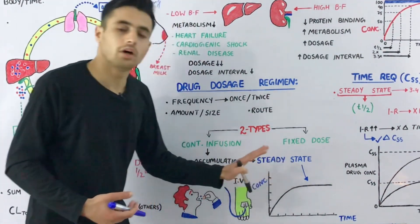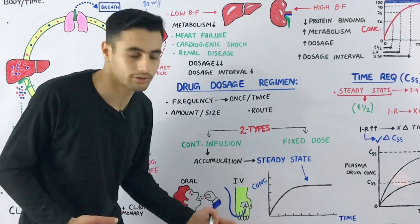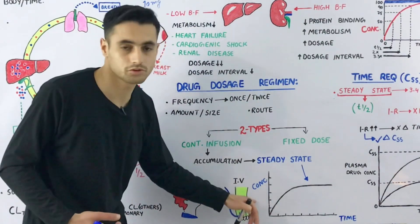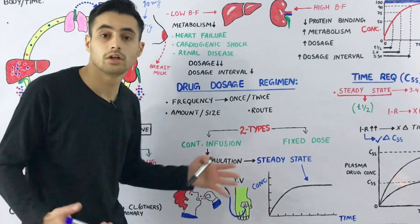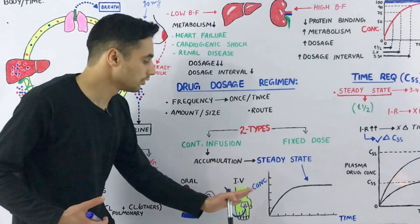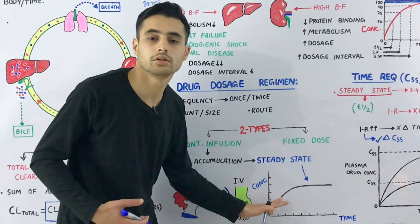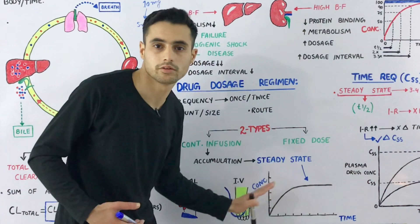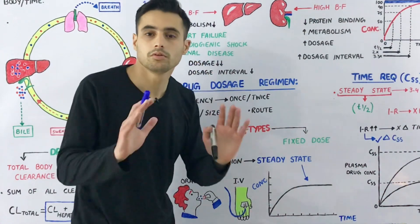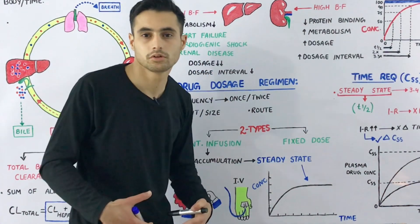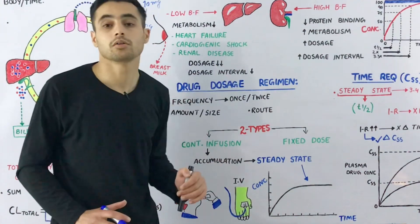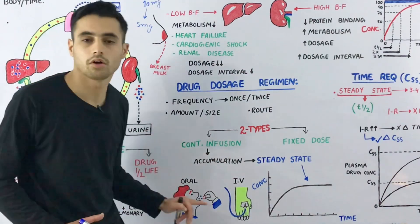To understand this concept more clearly, have a look at this graph — time on the x-axis and concentration of the drug on the y-axis. In continuous infusion, a constant amount of drug is being delivered, so the drug concentration increases gradually until a steady state is achieved. The steady state is when the rate of drug entry into your body equals the rate of drug elimination from your body.